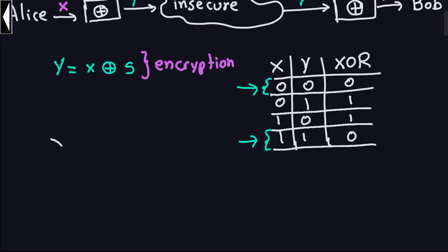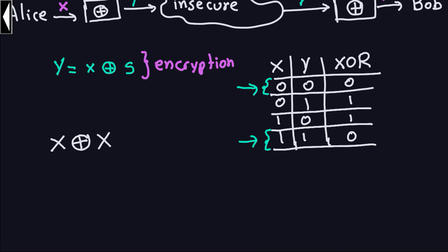If you take a bit and you XOR the same bit — so X is a bit and X is a bit, it could also be a string of bits — what happens with the result? 0 XOR 0 is 0, and 1 XOR 1 is 0 again. They always give you 0. So if you take a bit and XOR it with the same bit, it's going to give you 0. In other words, it's going to be a string of zeros.